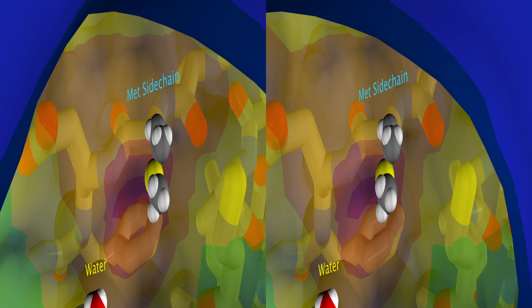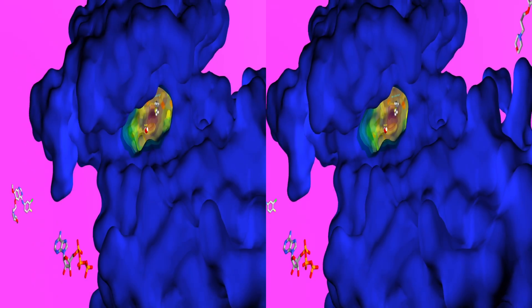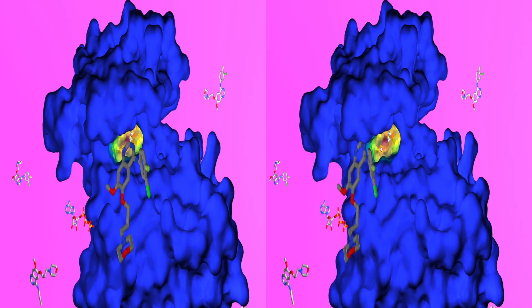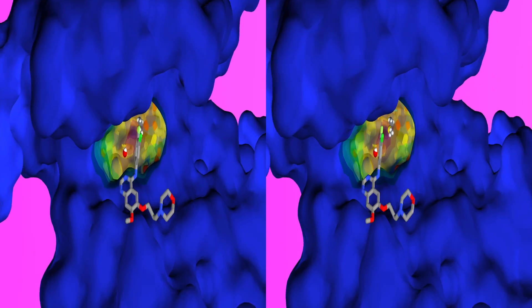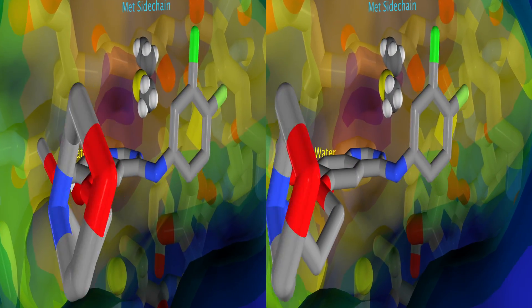This bulkier side chain pushes the water molecule away from the original region. Because the water molecule is no longer close to Iressa after the amino acid mutation, the interaction between Iressa and the protein is weakened and no hydrogen bonding can occur.